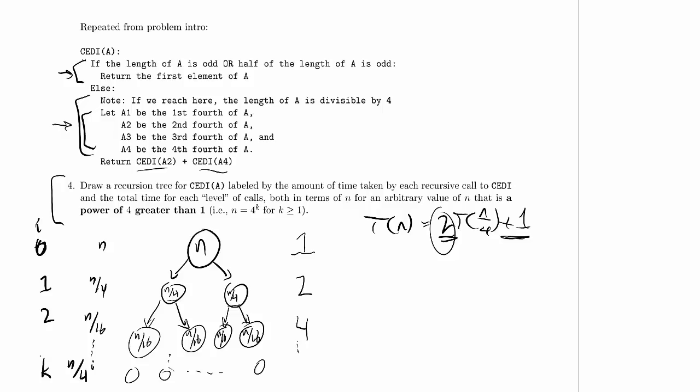What is k? How far down do we have to go before n over 4 to the i gets to our base case? Remember our base case now is going to be when the length is 1. Since this is a power of 4, n, we're only going to get to the if part of this if-else statement when we get down to 1.